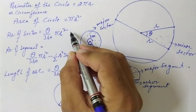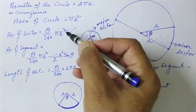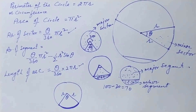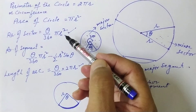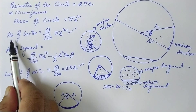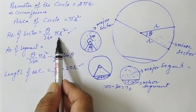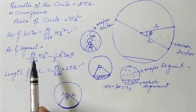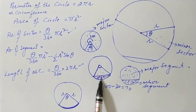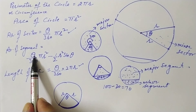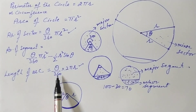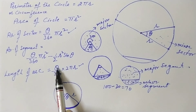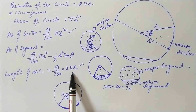All these formulas can be derived using the unitary method. To summarize: Area of sector = θ/360 × πr²; Area of segment = θ/360 × πr² − ½r²sinθ; Length of arc = θ/360 × 2πr, where 2πr is the circumference of the circle.